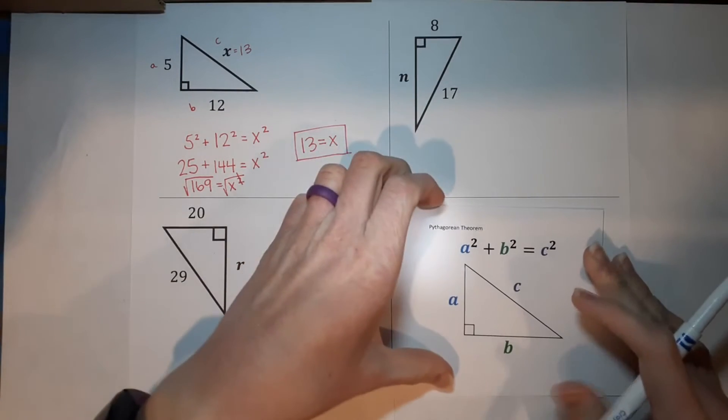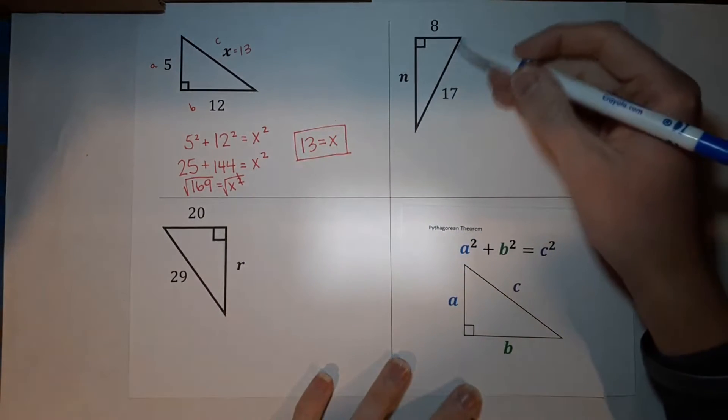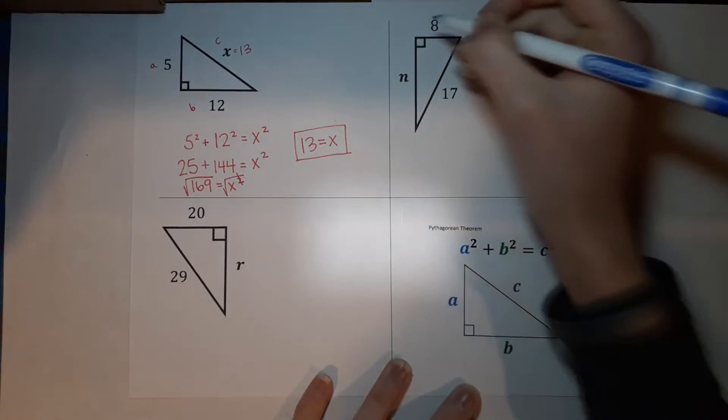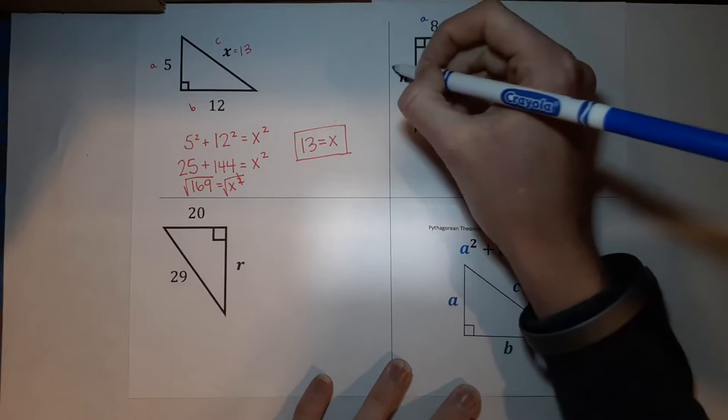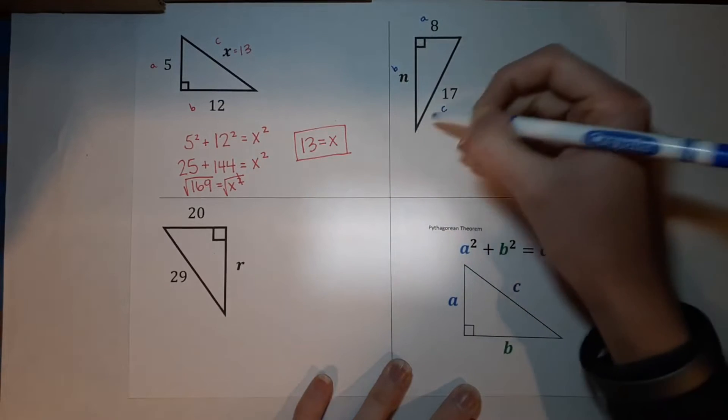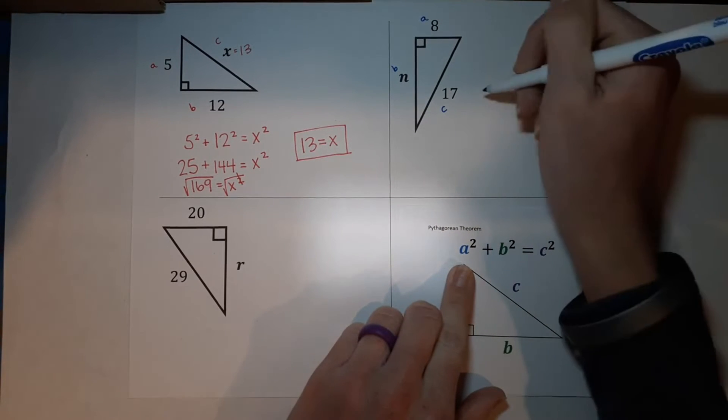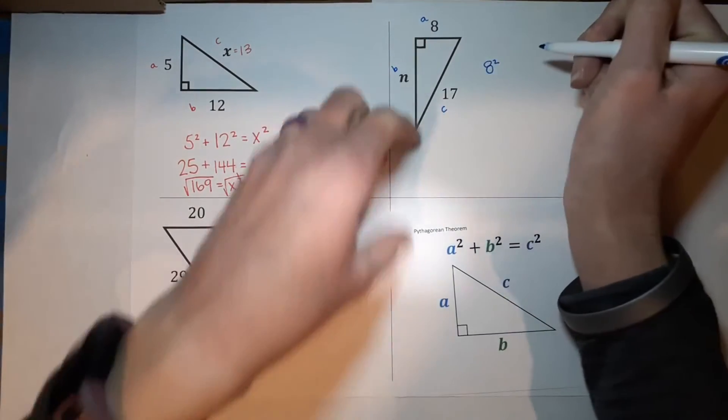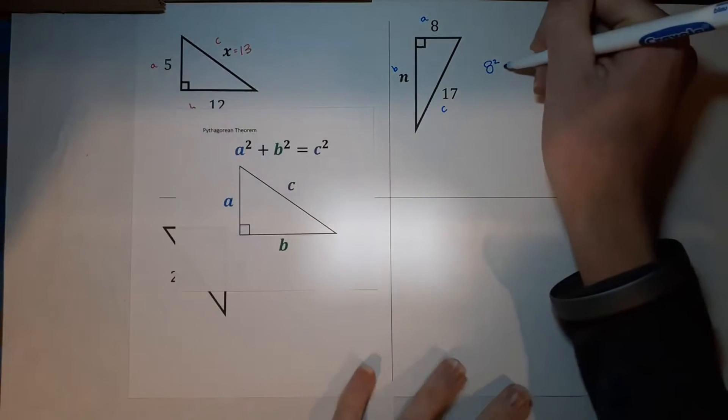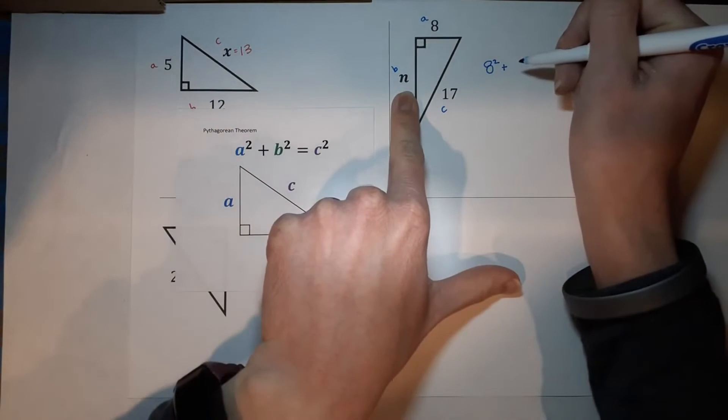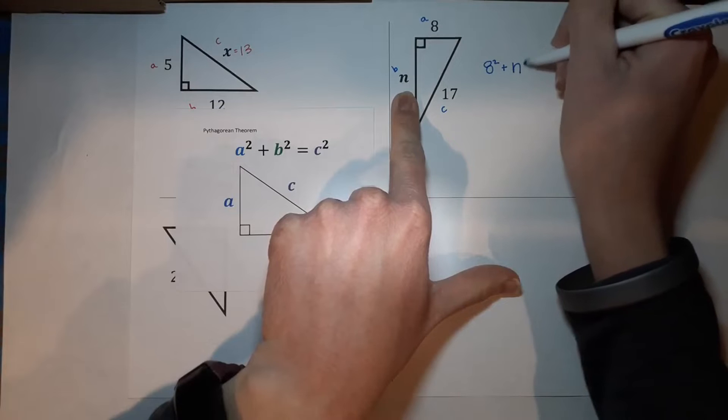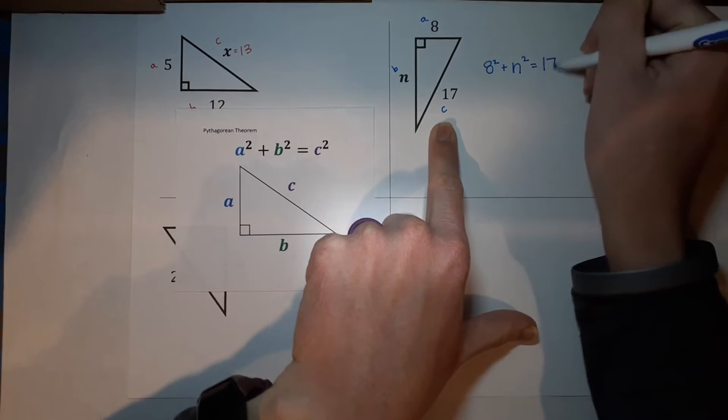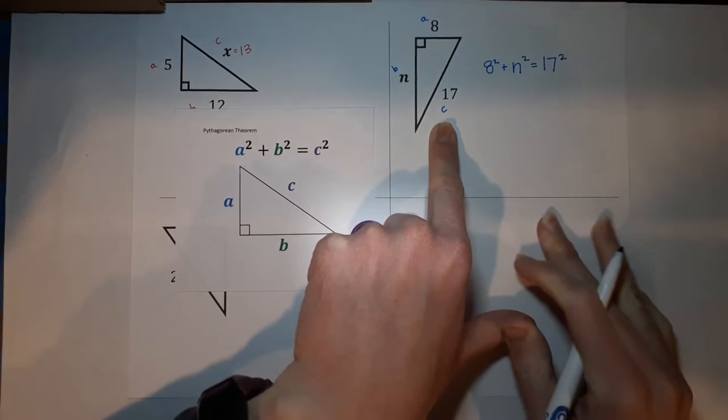This one is a little bit different. We have our hypotenuse. We have our C. We're missing one of our legs. So I'm going to label these A, B, C. C is my hypotenuse. A squared is eight squared. Plus B squared, which is N. That's the one I don't know. N squared equals C squared. C is 17. 17 squared.